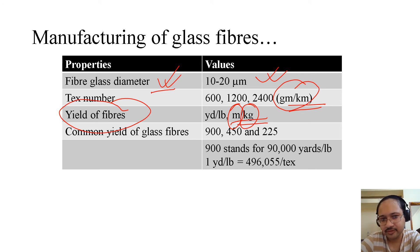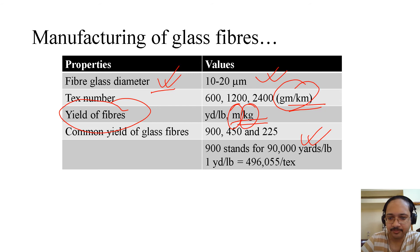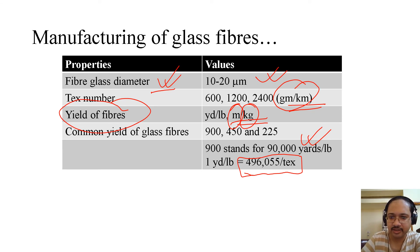The yield of fibers has dimensions that are just the inverse of the tex. So inverse of tex gives the yield. Common yield values for glass fibers are 900, 450, or 225 — where 900 stands for 90,000 yards per pound. One yard per pound equals 496,055 over tex. If in an exam you are asked to find tex or yield, you will be given this formula.